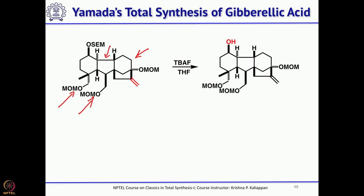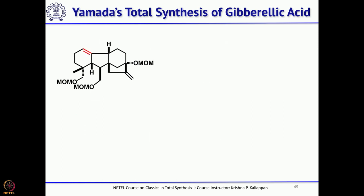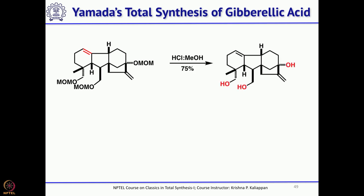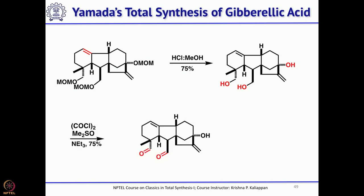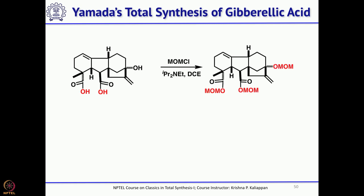The iodolactonization has to be done, and a hydroxyl group must be introduced on this ring. TBAF removes the SEM group to give the hydroxyl group — SEM is trimethylsilylethyl methyl chloride. Then mesylate and eliminate with DBU to get the double bond. Remove all MOM groups with HCl/methanol to get the triol — one tertiary alcohol and two primary alcohols. Oxidize the primary alcohols under Swern conditions to get the aldehyde, then further oxidation under Pinnick conditions gives the dicarboxylic acid. Then carry out iodolactonization.